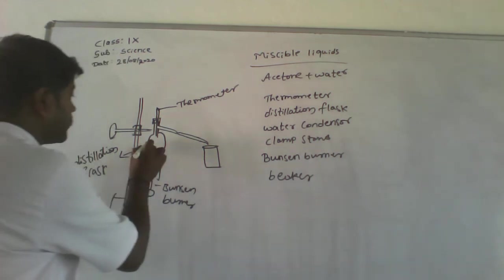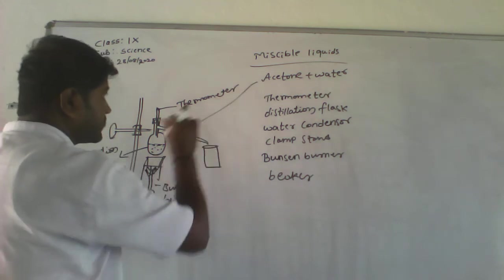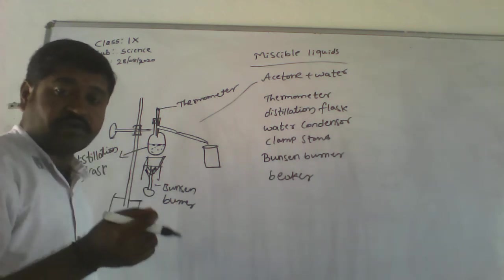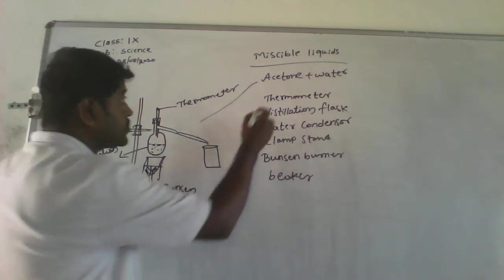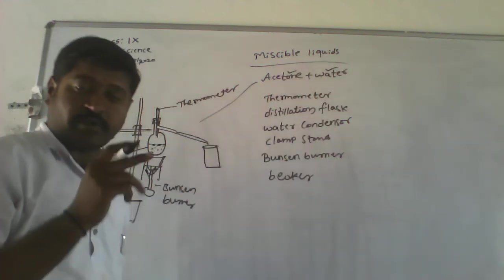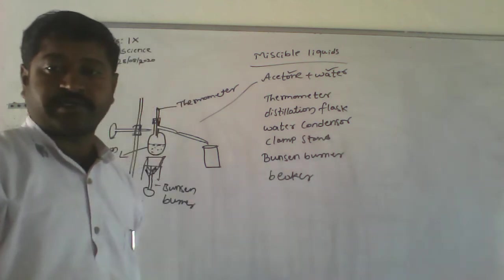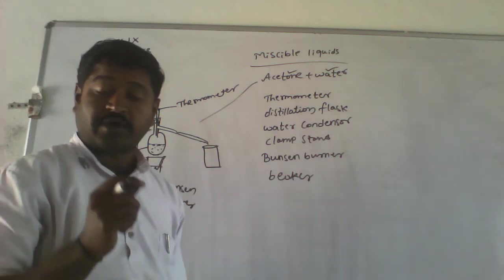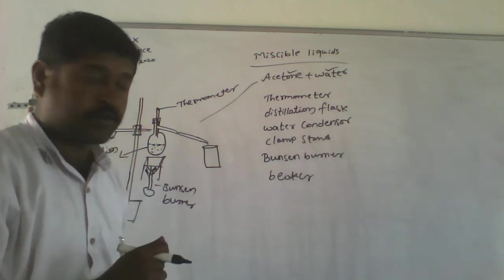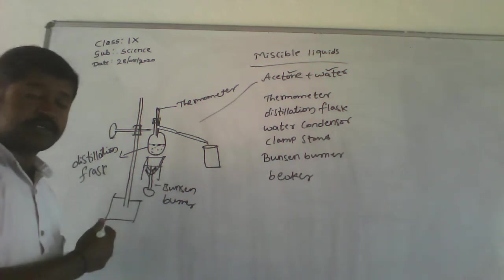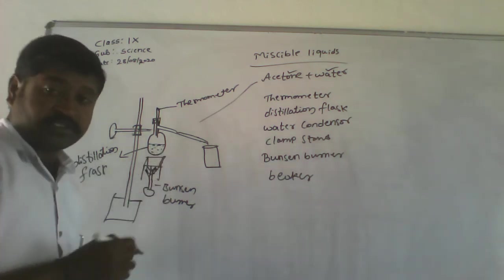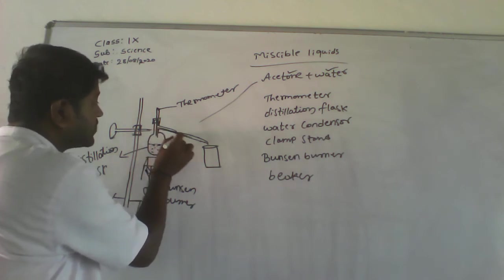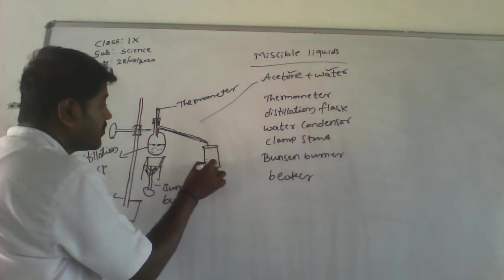Here this is the mixture of acetone and water. We should remember there is a difference of 25 Kelvin in temperature between these two, which means acetone has a different boiling point and water has a different boiling point. We start heating with the Bunsen burner and the one with the lower boiling point starts evaporating, moves into the condenser, cools, and falls into the beaker.